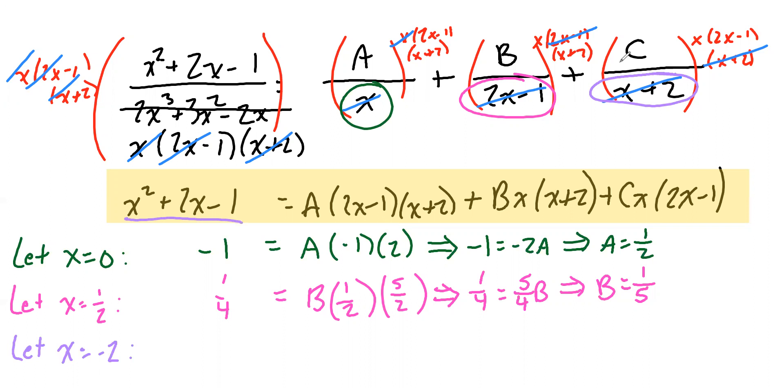If we let X equal negative two here, we'll get negative two squared, which is four, plus two times negative two, which is negative four, minus one. Those cancel, leaving us a negative one.